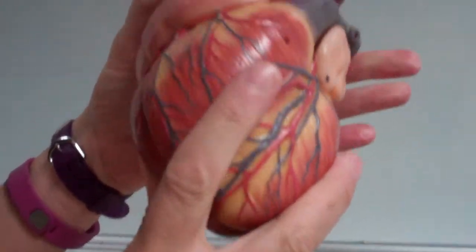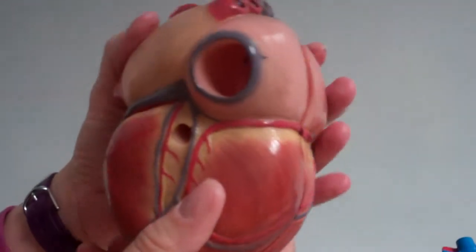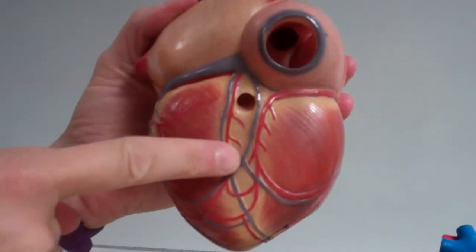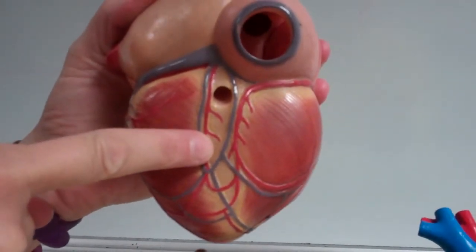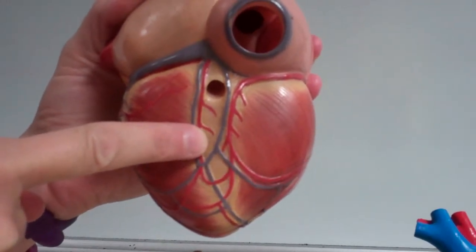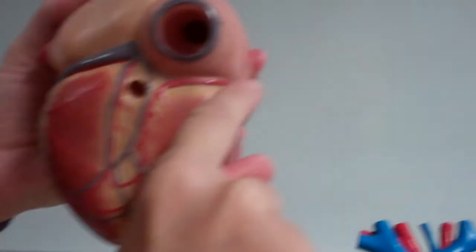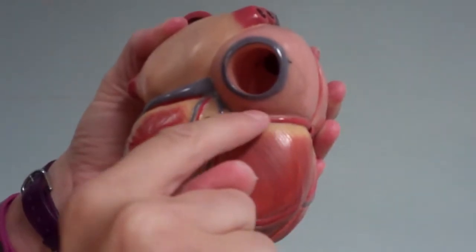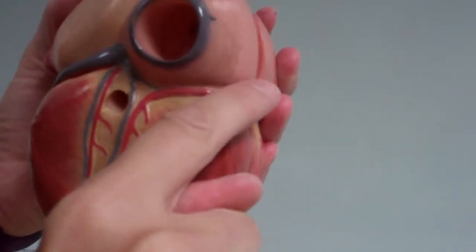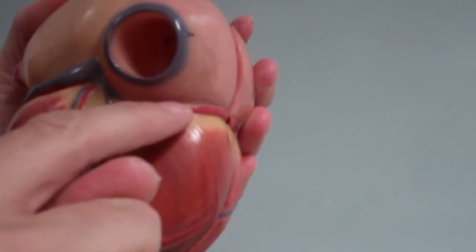The other two veins that we want to learn are the middle cardiac vein in the posterior interventricular sulcus, and then the small cardiac vein that's running along with the right coronary, right here in this coronary sulcus.